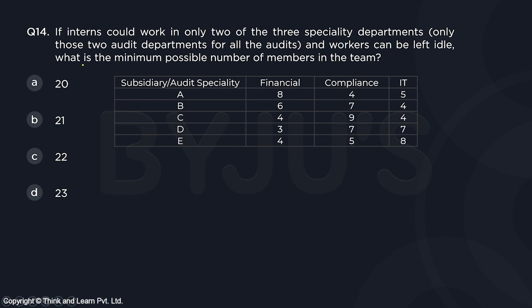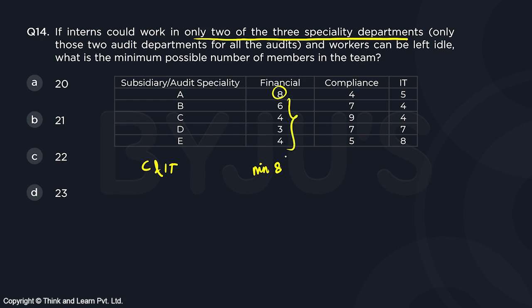Question number 14: If interns could work in only two of the three speciality departments — only those two audit departments for all audits — and workers can be left idle, what is the minimum possible number of members in the team? Since which two departments are not mentioned, we must consider three cases. Case 1: interns work in compliance and IT. In this case, there would be a minimum of eight permanent employees in financial to cover all subsidiaries.